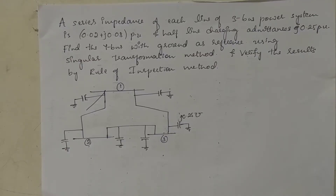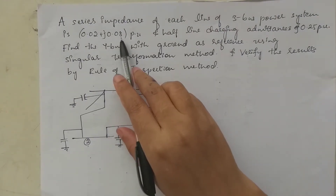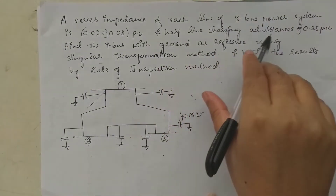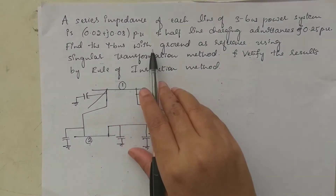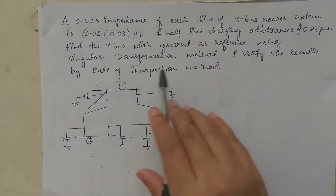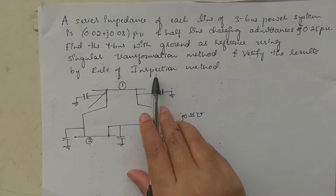Hello students, in today's class we'll see the difference between the singular transformation method and the rule of inspection method by solving a common problem. The problem is: a series impedance of each line of a three-bus power system is 0.02 + j0.08 per unit, and half-line charging admittance is j0.25 per unit. Find the Y-bus with ground as reference.